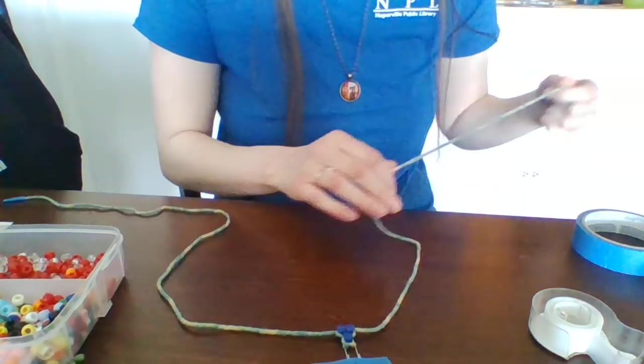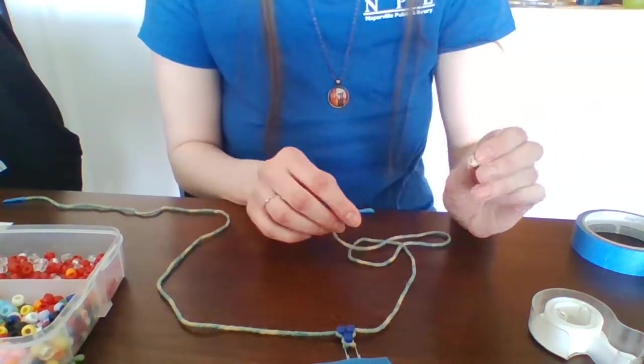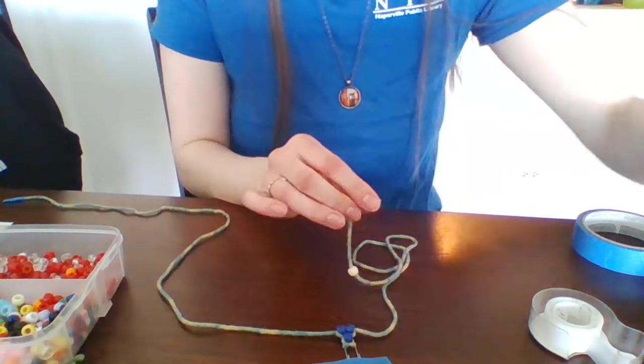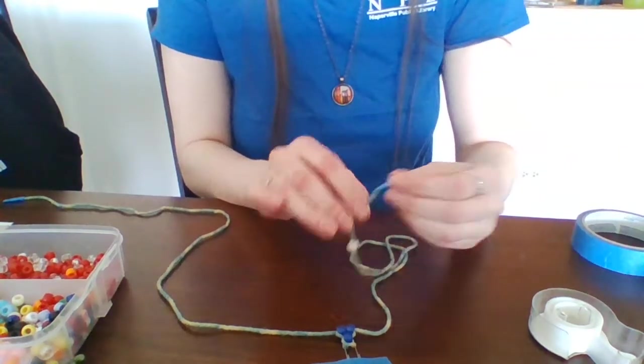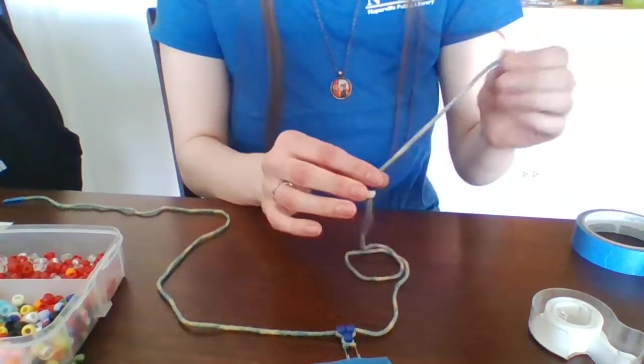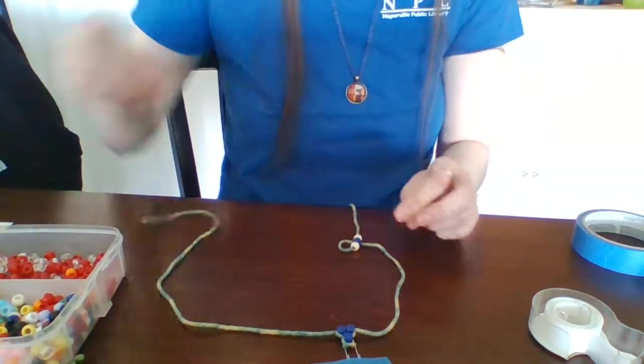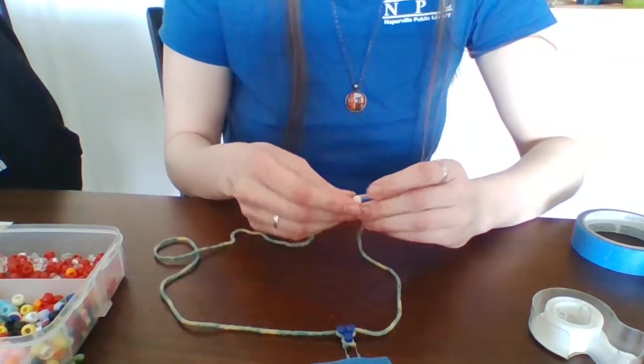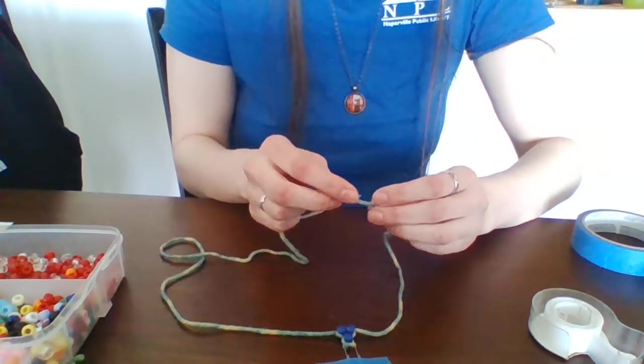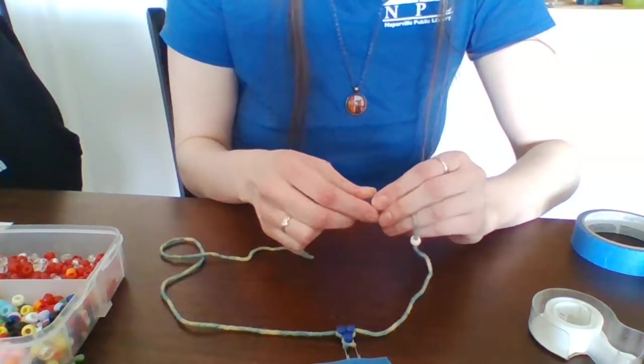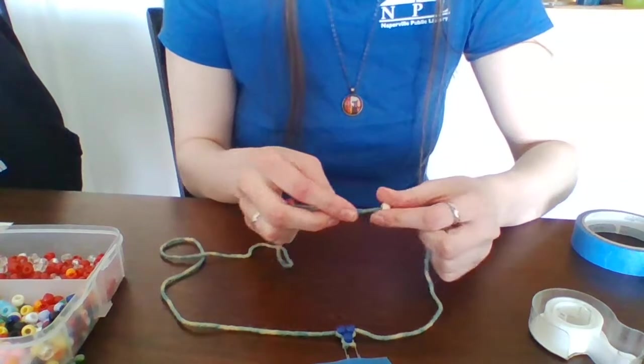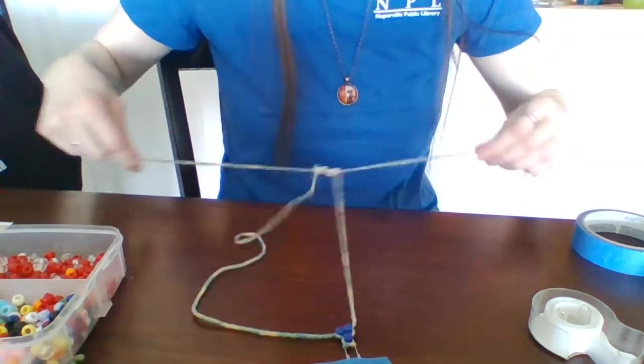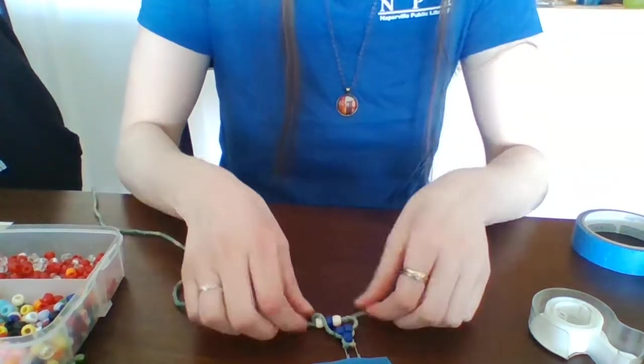All right, next we're going to add some other colors because we're working on the eyes now. Because I'm using off white for the eye, I'm pushing off white through, then a blue for the body, and then the other eye. So that makes three. Once again we'll take this other string and push it through the opposite way. Now you can do all three at once, or if it's easier for you, you can thread one bead at a time. Just make sure each bead stays on both strings when doing this. Once again you'll pull tight and you'll start to see the lizard come together.